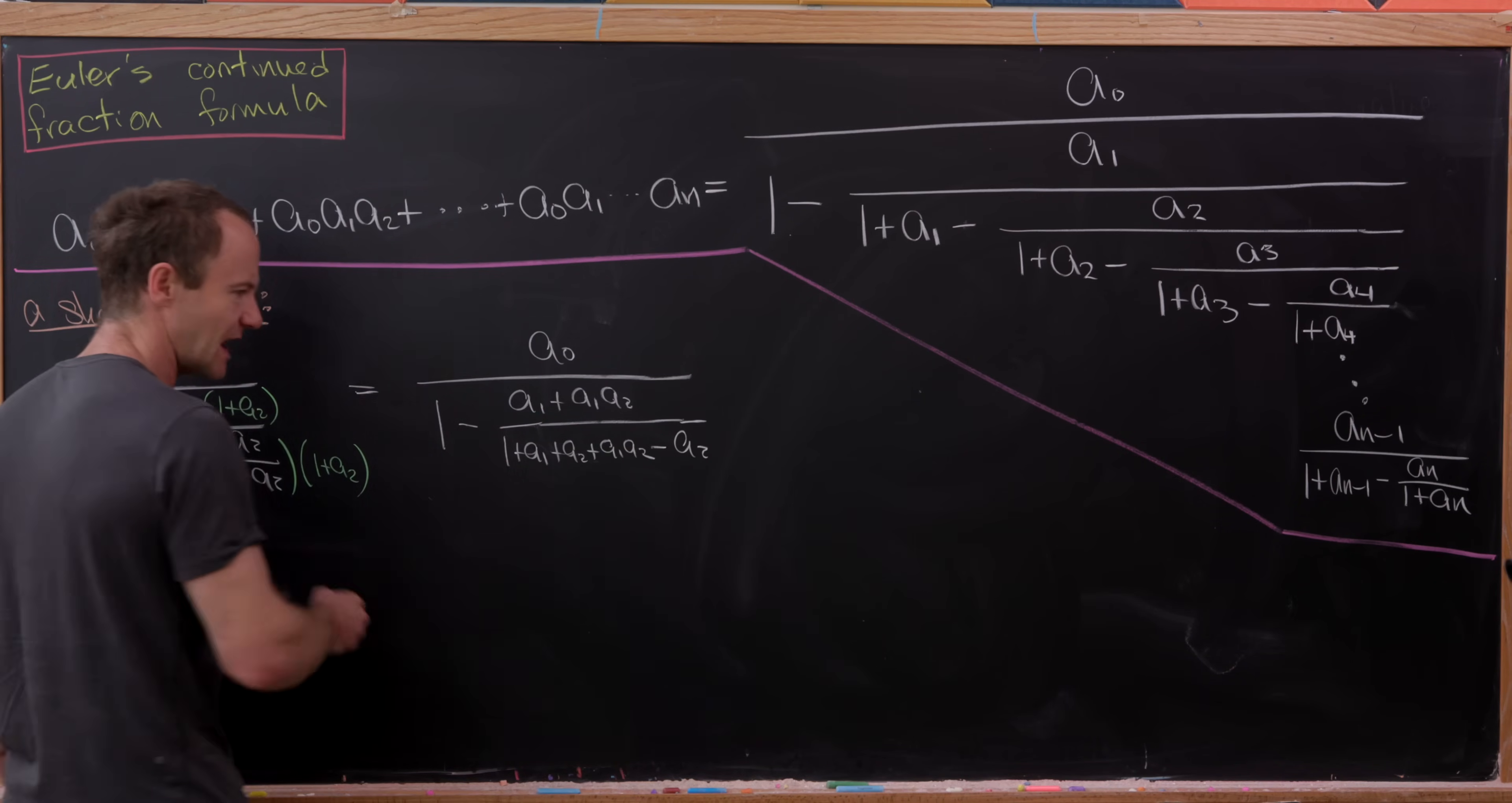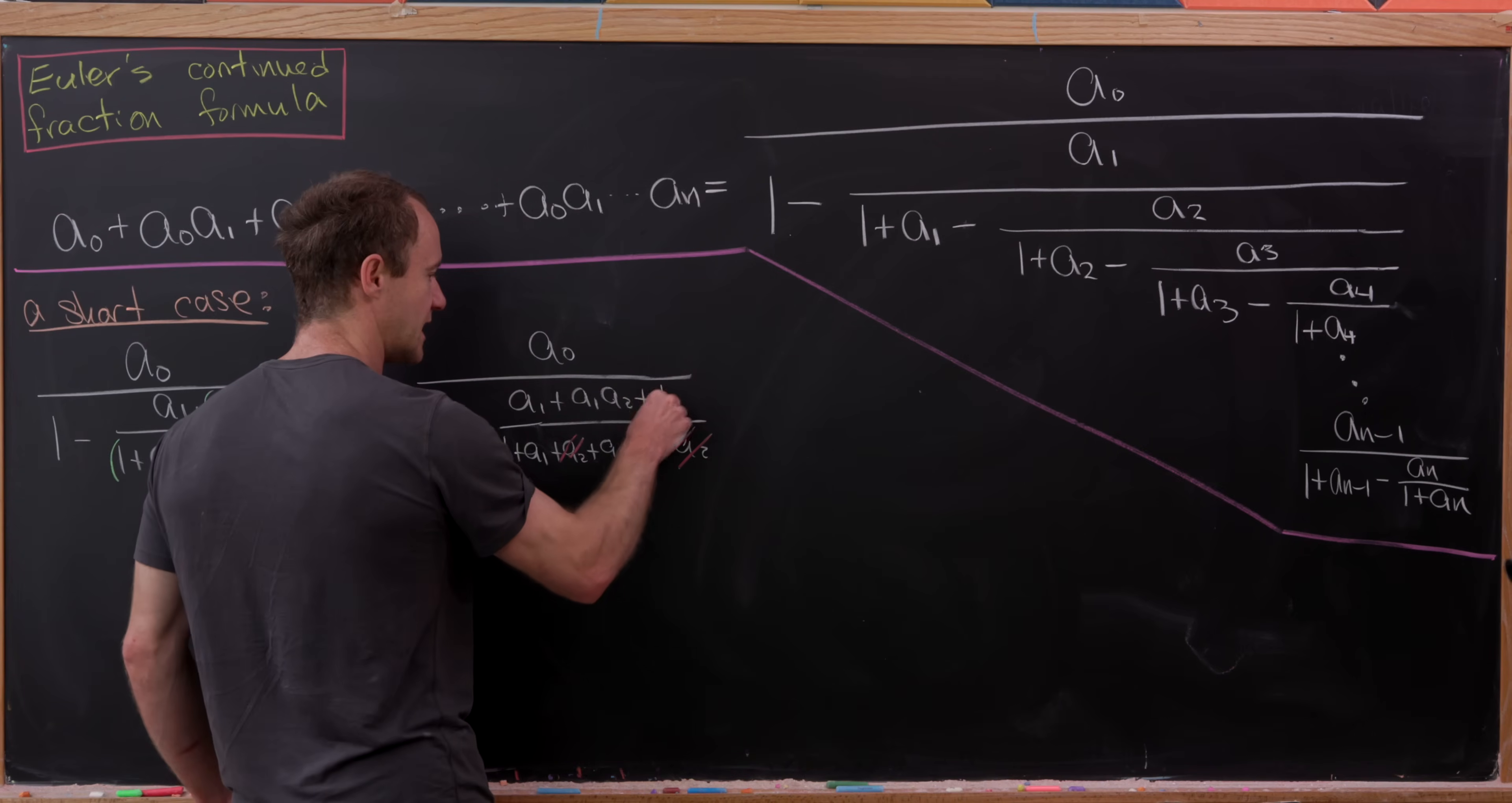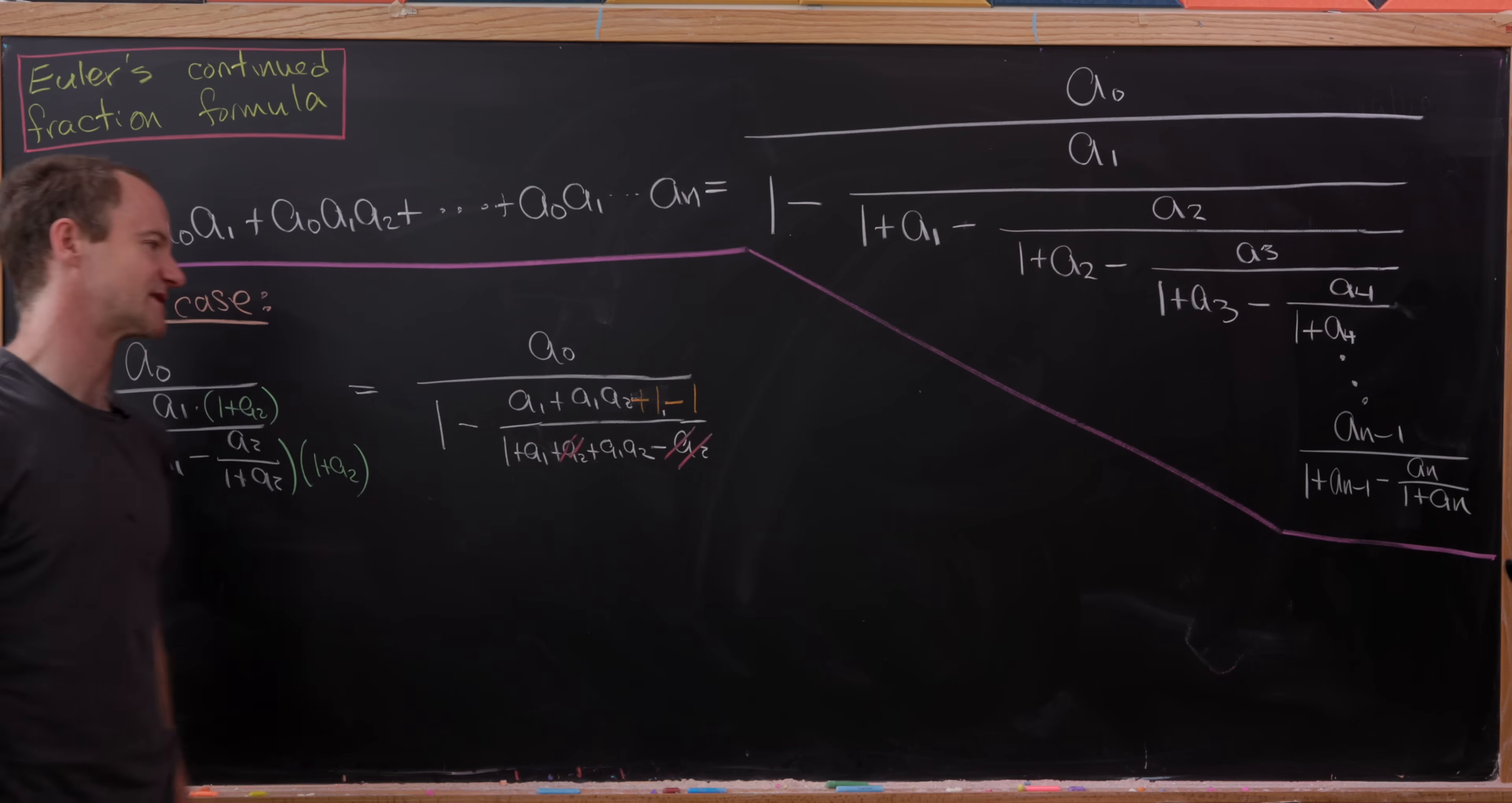But now let's see what simplification we can do here. We can take this a2 and cancel it with this a2. And then perhaps we'd like to do one more thing as well. And that is maybe we'll add one here in the numerator. Maybe we'll add one here in the numerator and also subtract one. And you might ask, what's the motivation for that? Well, that's to build this numerator until it looks like what's left over there.